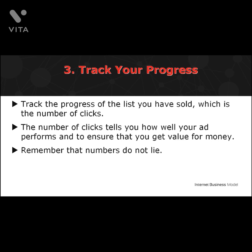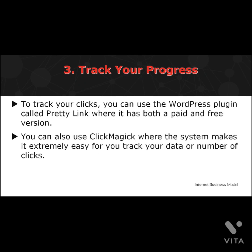The third and final rule is to track the progress of the list you have sold — specifically, the number of clicks. This step is important so you have an idea of how much you are able to deliver to your clients. The number of clicks tells you how well your ad performs and ensures you get value for money. You can use the WordPress plugin called Pretty Link, which has both paid and free versions, to create short links with all the tracking required. You can also use Click Magic, which makes it extremely easy to track your data, providing information such as your traffic score and which tier the traffic came from.